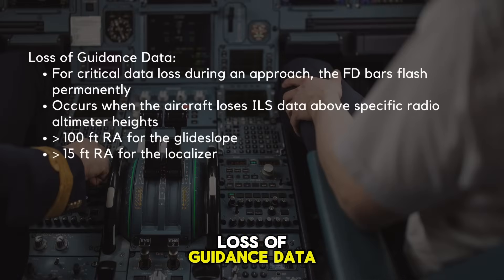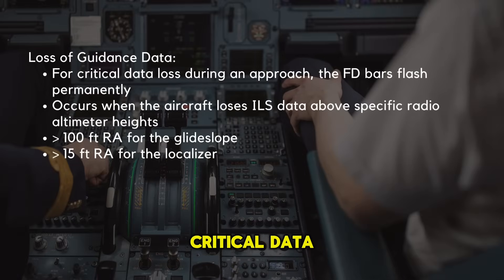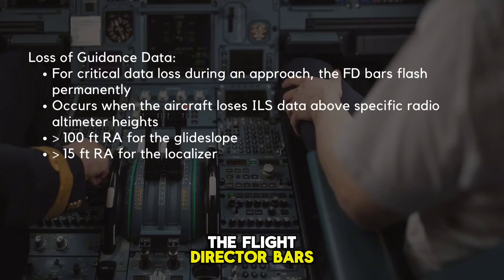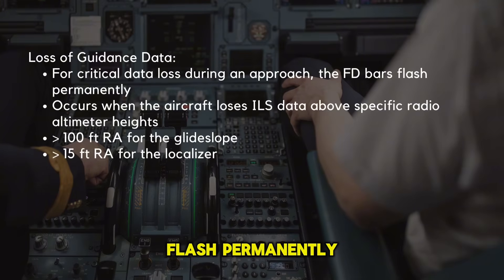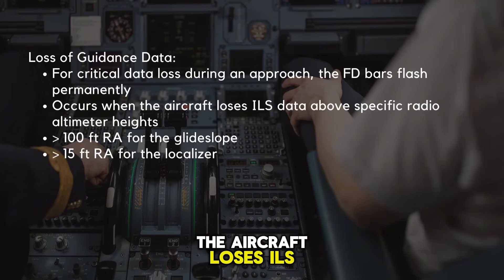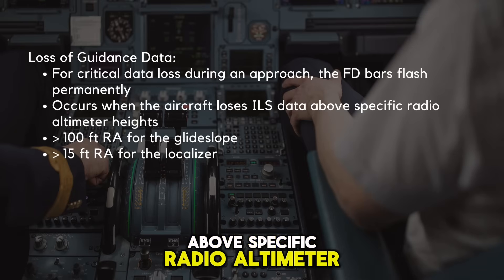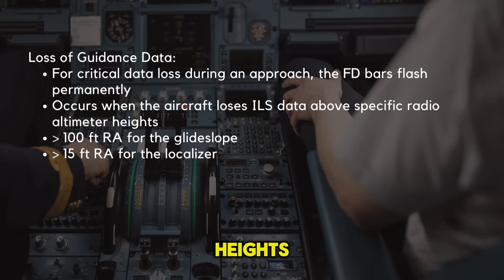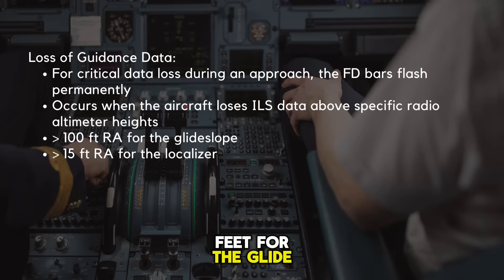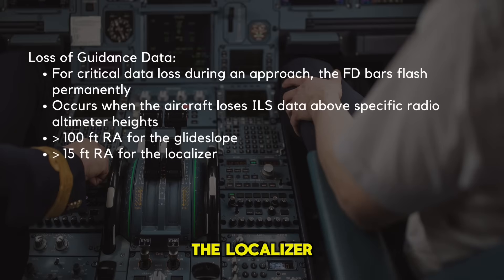In the case of loss of guidance data: during an approach, if critical data is lost, the flight director bars flash permanently. This can occur when the aircraft loses ILS data above specific radio altimeter heights — 100 feet for the glide slope and 15 feet for the localizer.